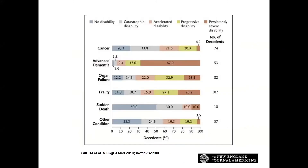Even looking at decedent work — patterns in the last year of life — comparing cancer, dementia, organ failure, frailty, and other conditions: frailty, like organ failure, represents many different patterns of disability in the last year of life. Importantly, the number of decedents in the frailty category is higher than any other group. We don't even have a name for it. Frailty is a stigmatizing condition and people tend not to talk about it, but it is a real phenomenon that needs attention.